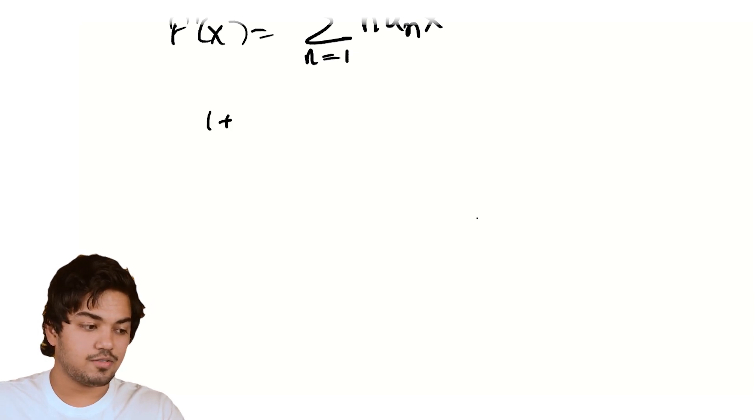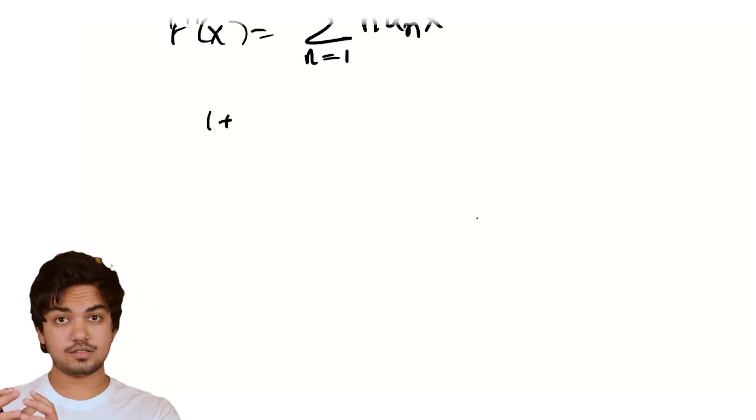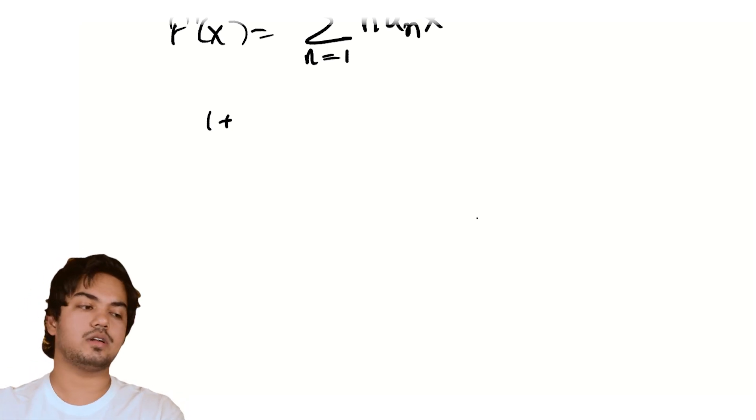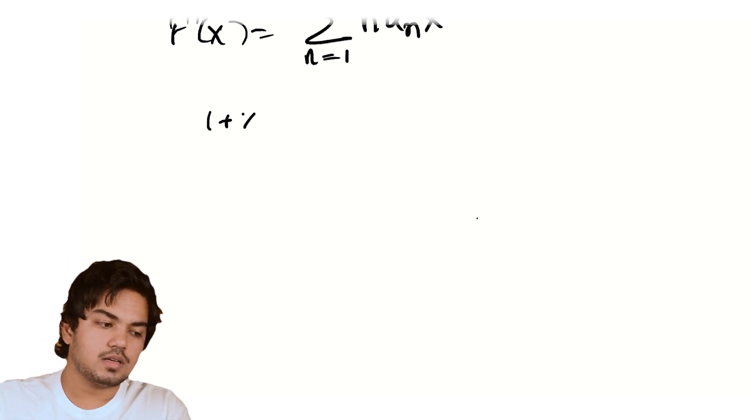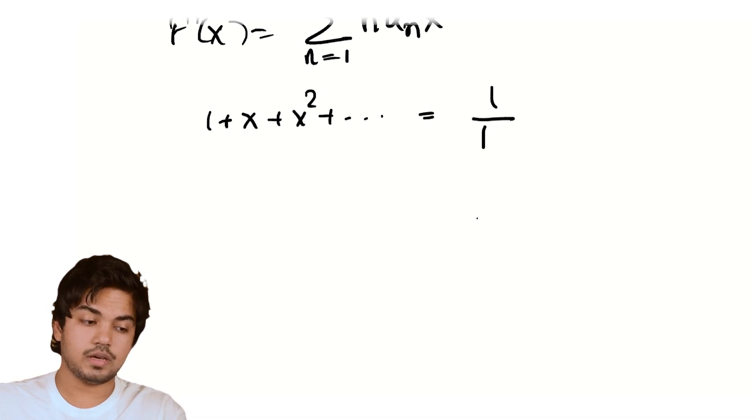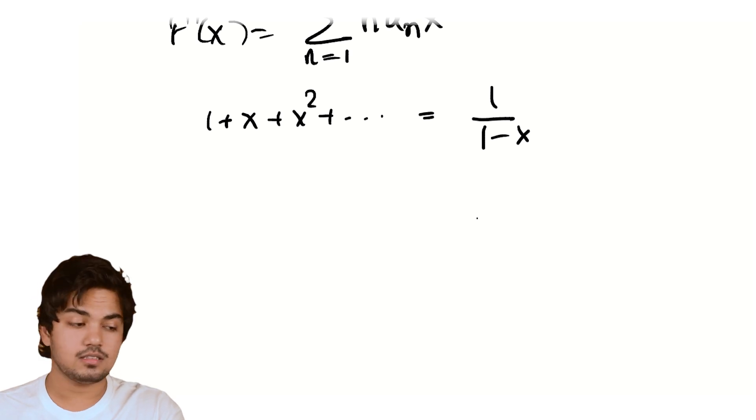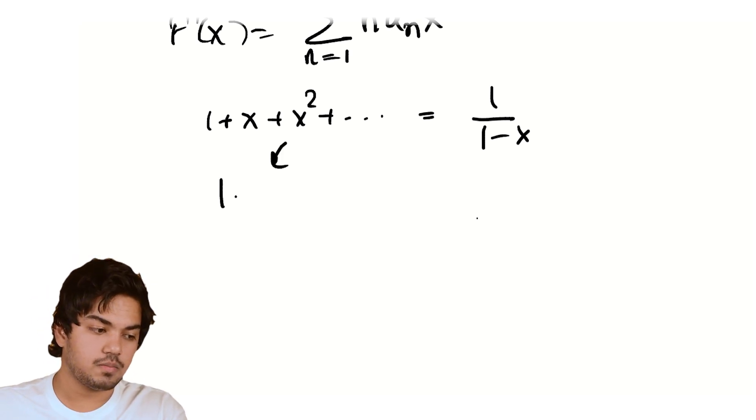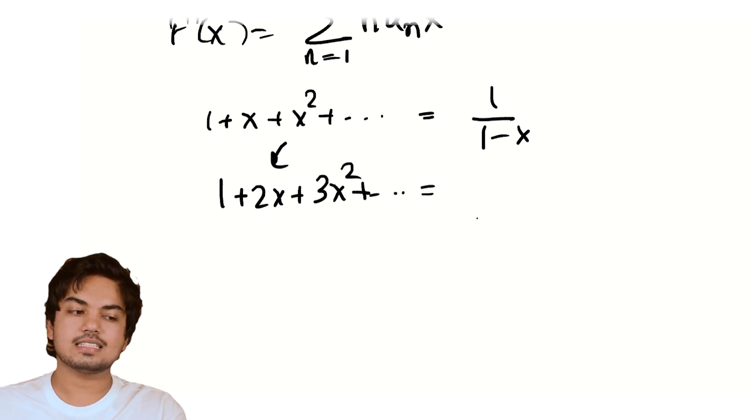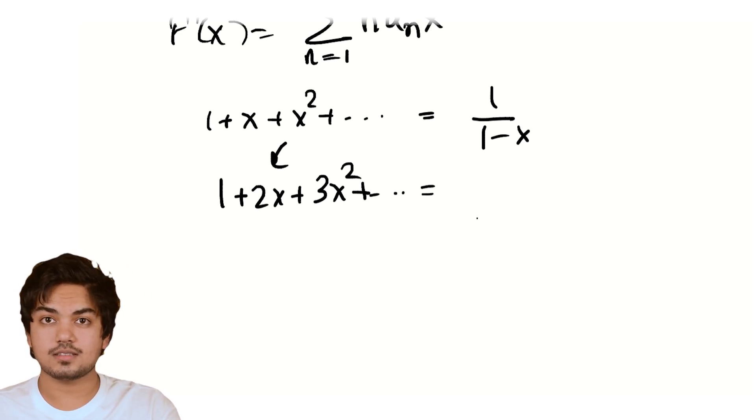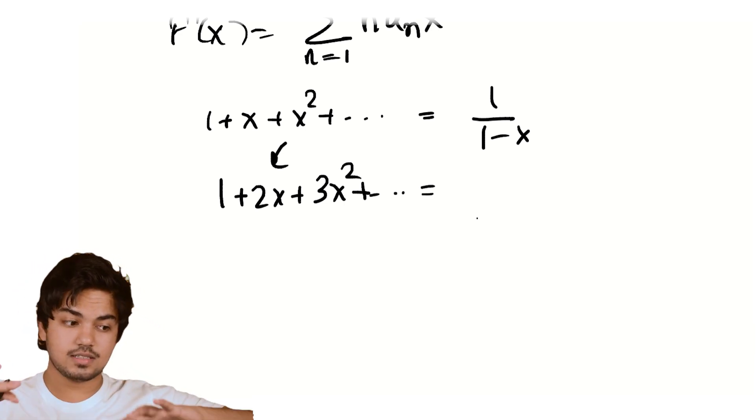So 1 plus x plus x square in the interval minus 1 to 1, we know that it's 1/(1-x). Hence if I take a derivative, 1 plus 2x plus 3x square and so on, this is the derivative of 1/(1-x). You can differentiate both sides and it will work perfectly. So this is just the use of chain rule. 1/t, the derivative is -1/t^2, but here we have a minus sign in front of x, so that minus sign goes over here by chain rule.